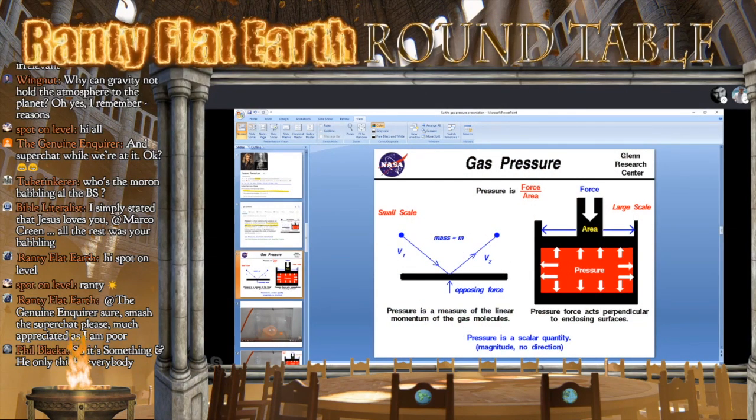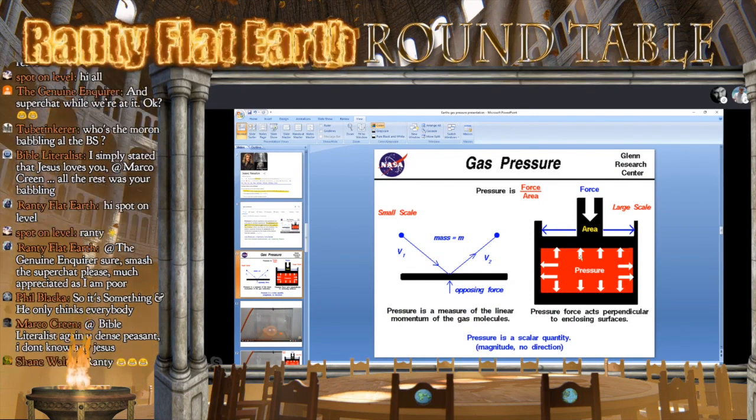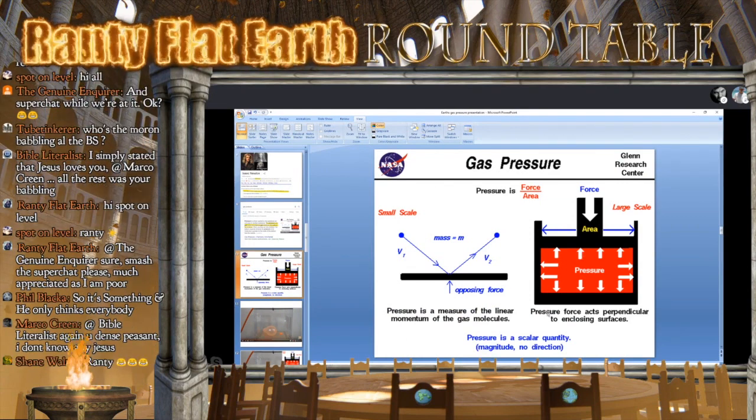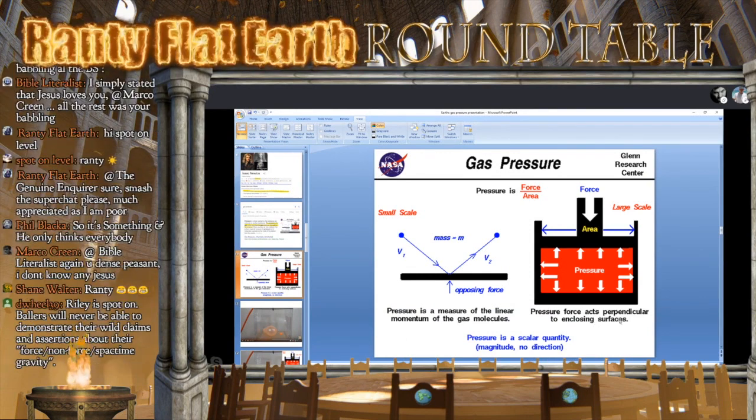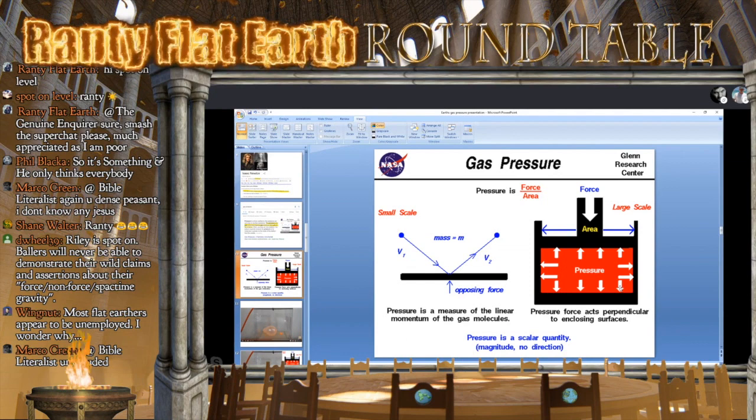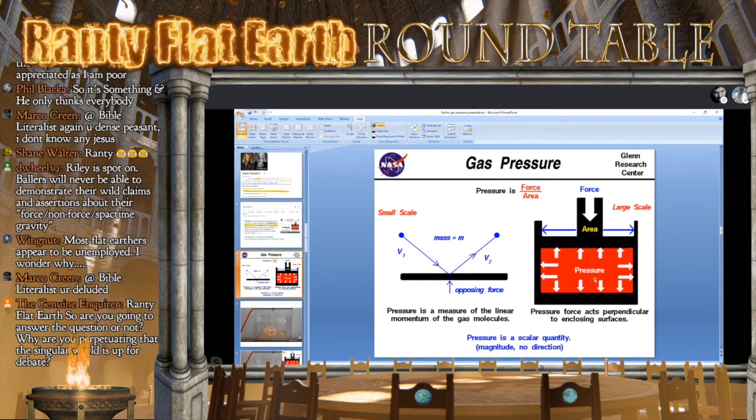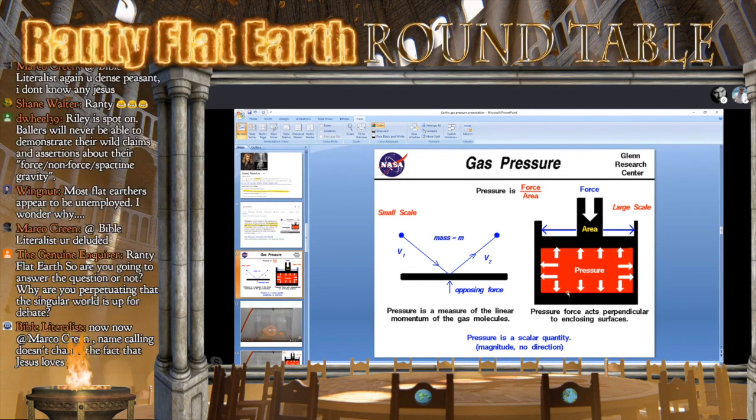NASA, and you can find this just by doing a rudimentary search on Google, tell you that air pressure is pressure force acts perpendicular to enclosing surfaces. Well, we do have gas pressure, and we know that it's pushing down on us because apparently we can feel it. Shout out to Matt Doxy. But we can feel the gas pressure, apparently, but it's pressing on all sides, not just on Earth. It's pressing in all directions.